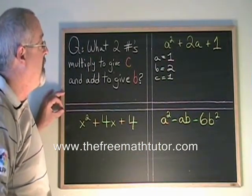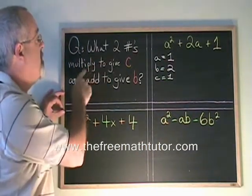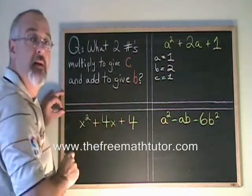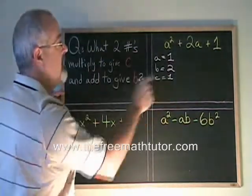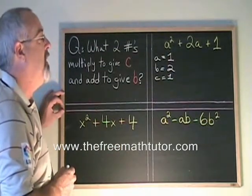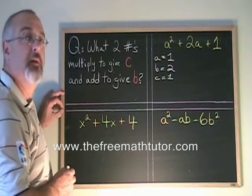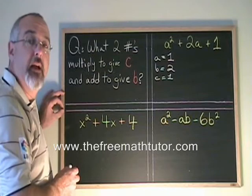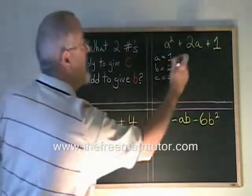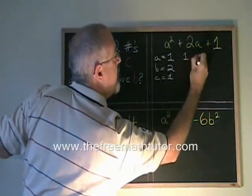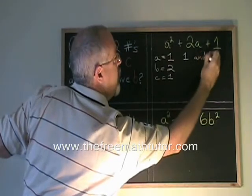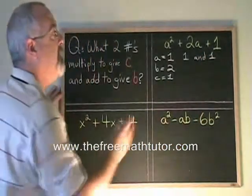Then I ask myself the question, what two numbers multiply to give c and add to give b? In this situation, c is equal to 1 and b is equal to 2. So I am asking, what two numbers multiply to give 1 and add to give 2? Those numbers are 1 and 1. And in this case, they're both positive.